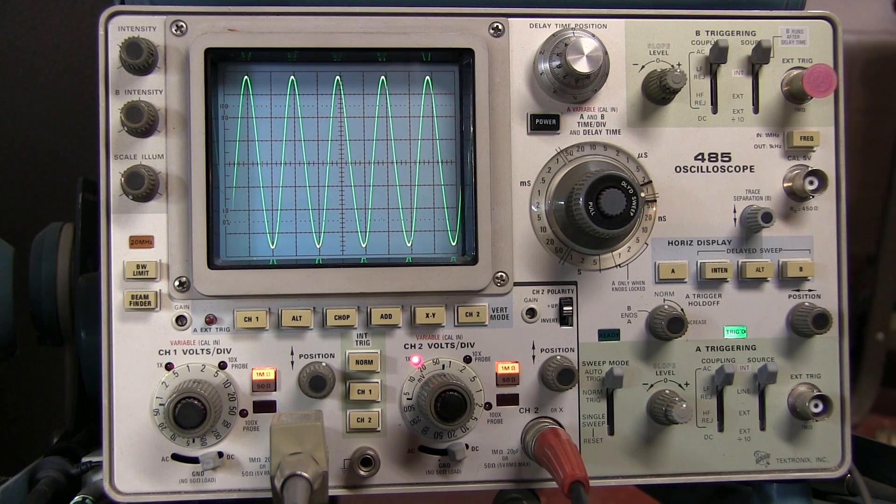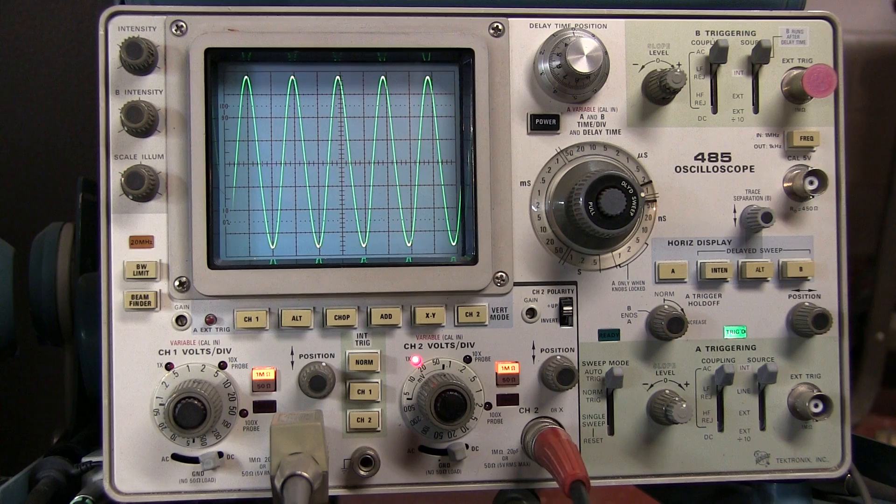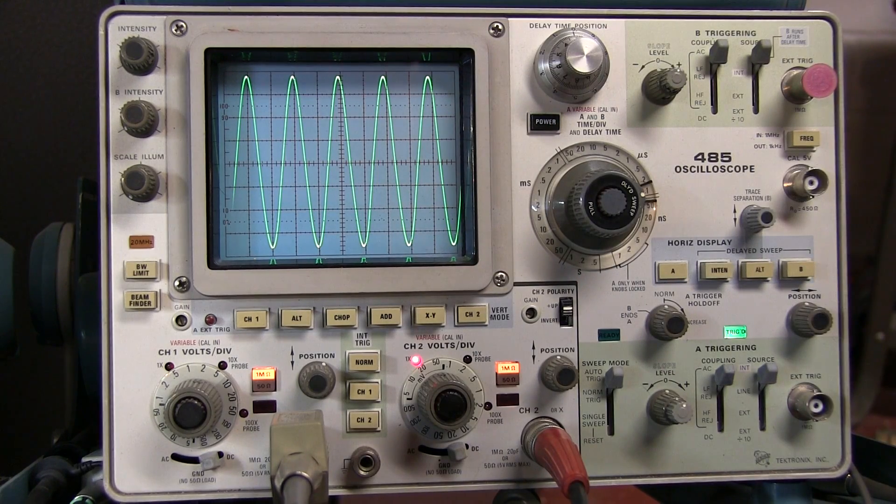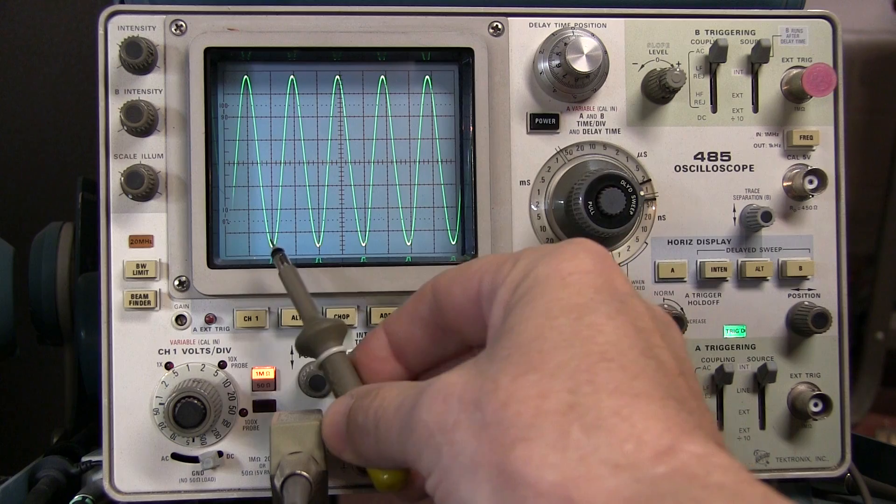So the scope I'll use in today's video is an old Tektronix 485. This is similar to a lot of analog scopes that many amateurs may have. I do have some analog scopes that actually have visible cursors you can put on the screen, but I'm not going to do that because not all analog scopes have that. So I'll show you how to make the measurement without having the benefit of those cursors.